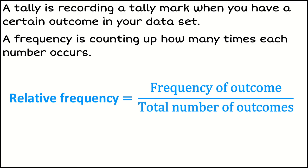So a tally is recording a tally mark, that's just a way of counting things up when we've got a bunch of data. The frequency is looking at how many times each of the outcomes occurs, and our relative frequency is when we turn that into a probability. So we take our frequency and divide by the total number.